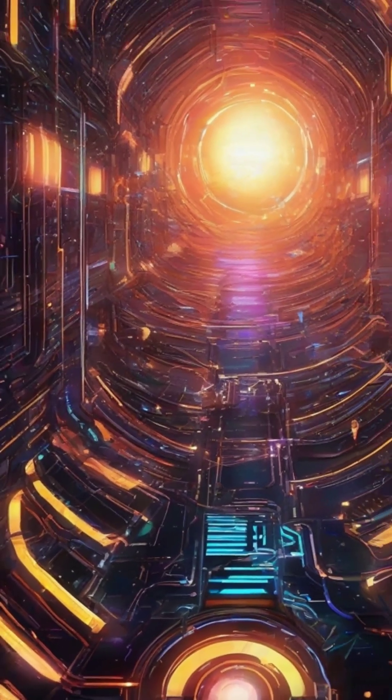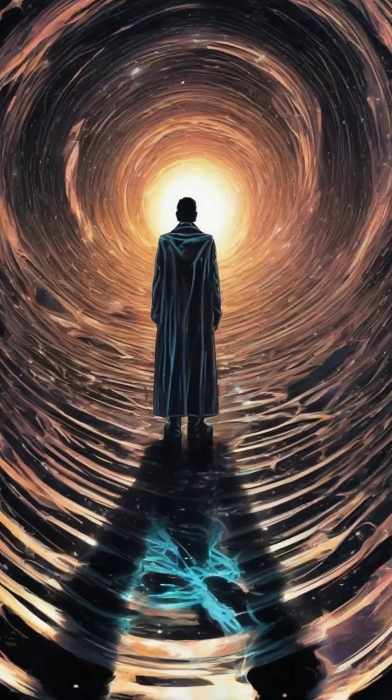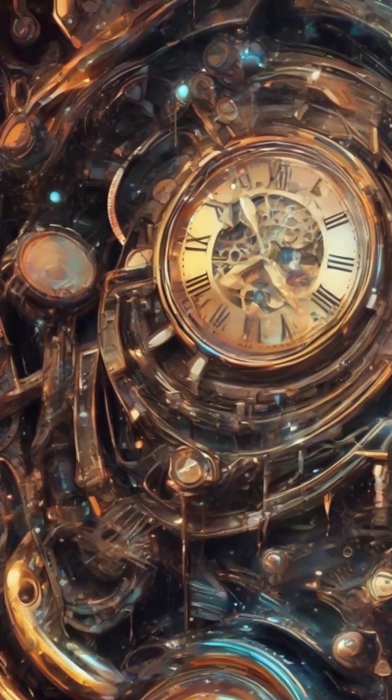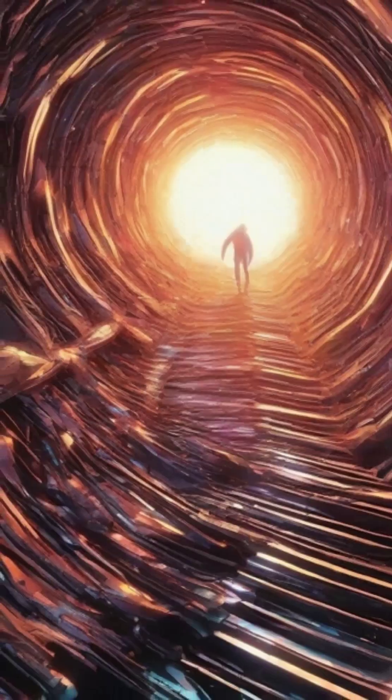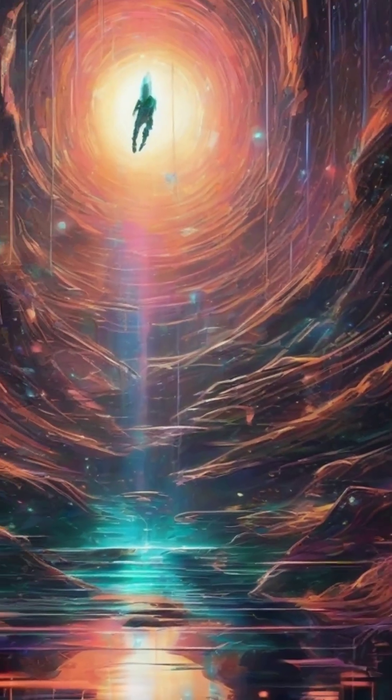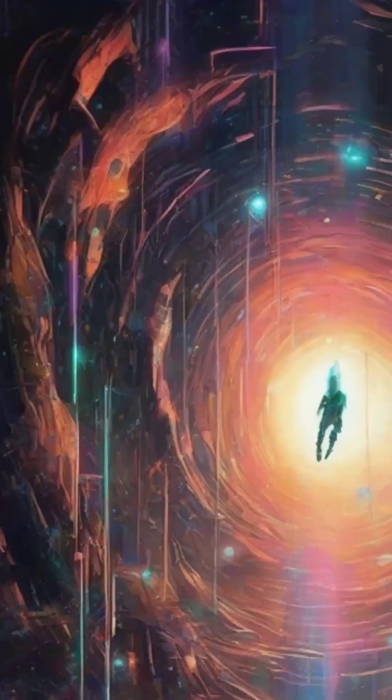The surface of a black hole is called the event horizon. It's the point of no return. Cross that line and you're gone forever. From the outside, you seem to freeze at the edge, time slowing to nothing. But from your perspective, you fall in quickly, silently.